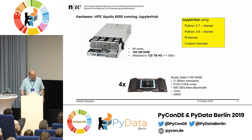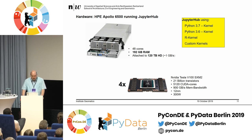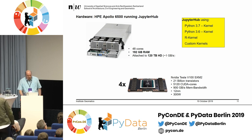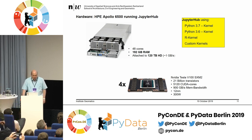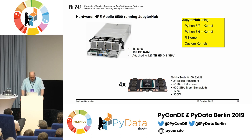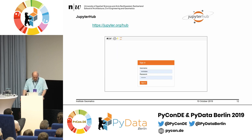What do we have on hardware? We recently bought an HPE Apollo 6500 — you can put 8 GPUs in it. We decided to have 4 GPUs inside, 192 GB of RAM, and 120 terabytes of fast storage. The GPU is 4 times the V100 SXM2. And on the Apollo 6500, we installed JupyterHub.